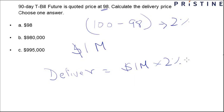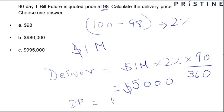So you just multiply this by 90 upon 360. This would give you a value of $5,000. So this is the discount upon the face value. Therefore, the delivery price would be 1 million minus $5,000.